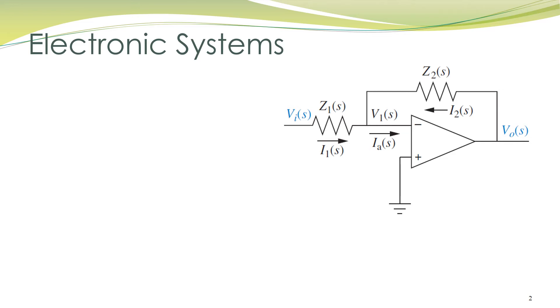Applying Kirchhoff's current law at the inverting input node: current entering into the node is equal to the current leaving the node. Since the op-amp has infinite input impedance, current Iₐ equals zero. Thus, current I₁ plus I₂ equals zero, or equivalently I₁ equals minus I₂. Furthermore, I₁ equals Vᵢ divided by Z₁.